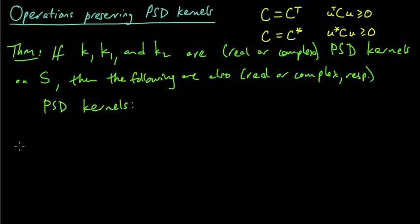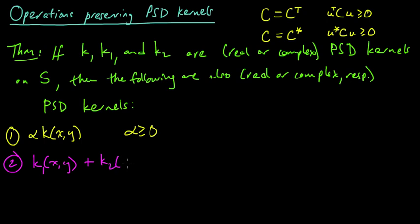Okay, so the first one. The first one is the simplest: if we just multiply by a constant. We take k(x,y), multiply it by some non-negative constant α, and this is a positive semi-definite kernel. Number two: if we add them, k1(x,y) + k2(x,y), this is also a positive semi-definite kernel.